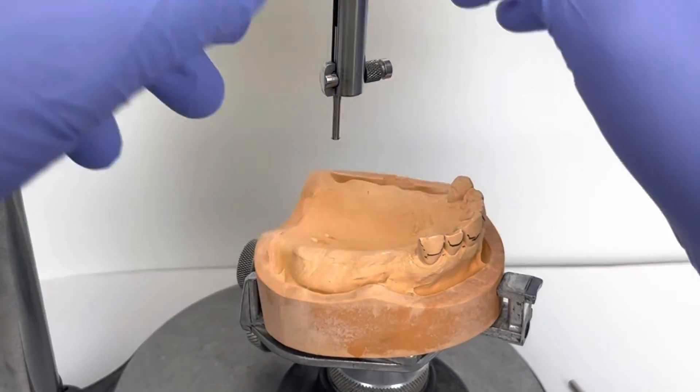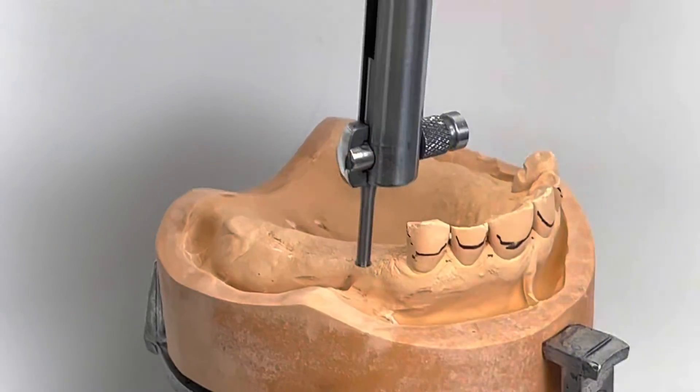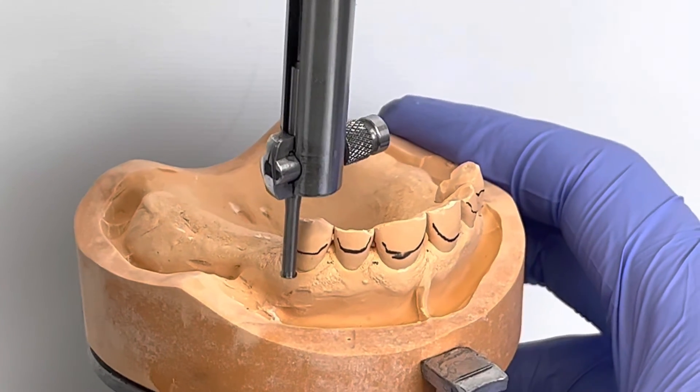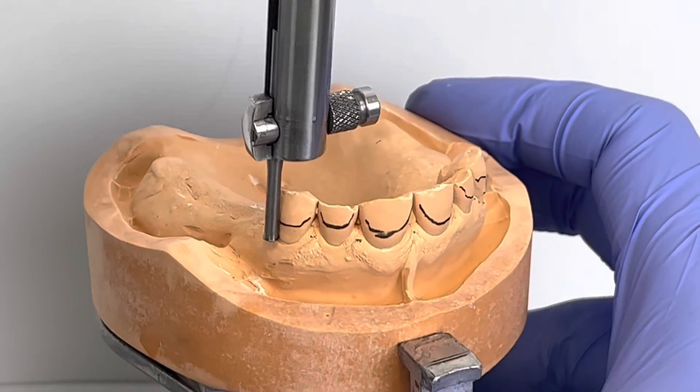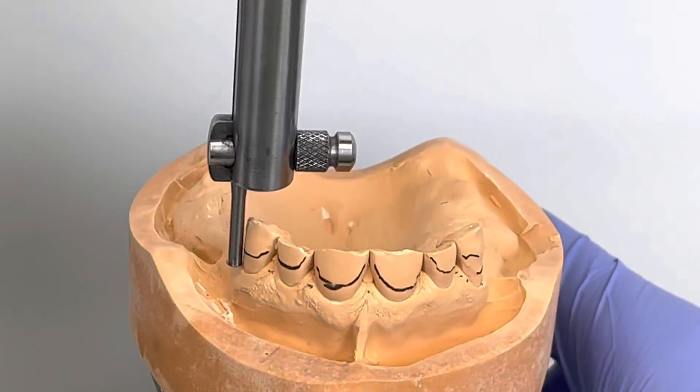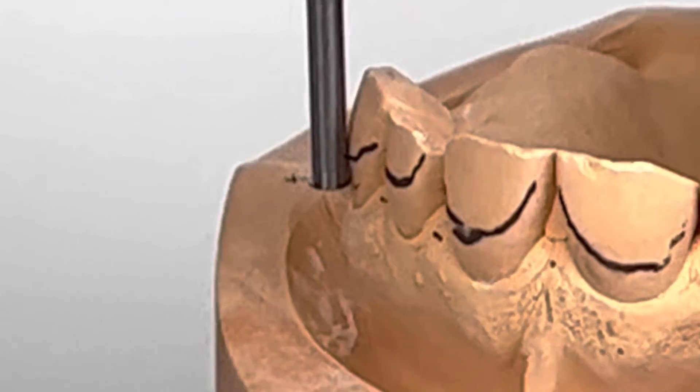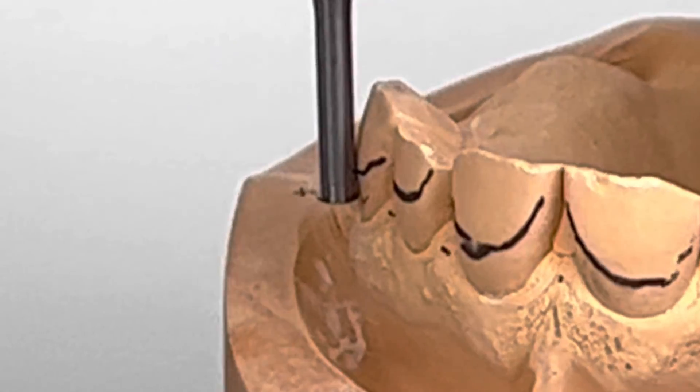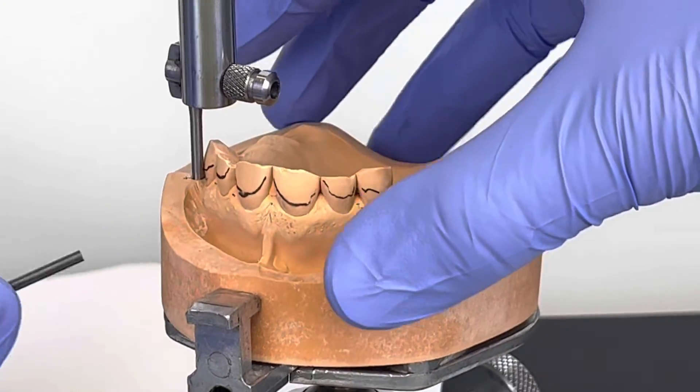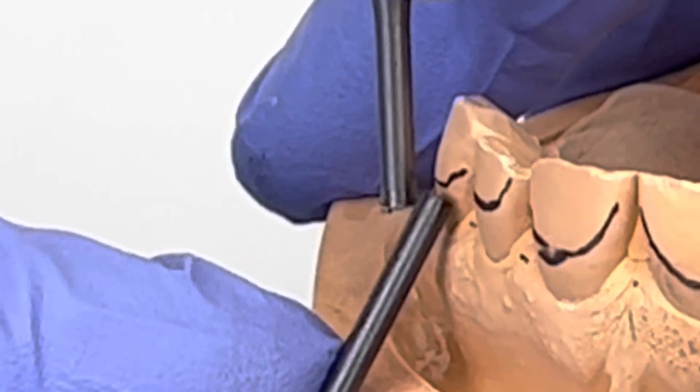It is placed within the mandrel. The undercut gauge is then positioned so that both the shank and the disc touch the teeth. The shank will inevitably touch the height of contour; wherever the disc touches is the indicated undercut. Those undercuts can then be marked with a lead marker to indicate the position of the undercut.